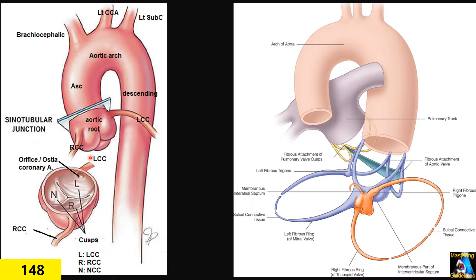The aortic root has four levels, or dimensions, or spots. The aortic valve has three leaflets or cusps, named based on the coronary artery that comes from that level. They are named the left coronary cusp — where the left coronary comes from the sinus of Valsalva — the right coronary cusp, and the non-coronary cusp, which doesn't have any coronary artery.